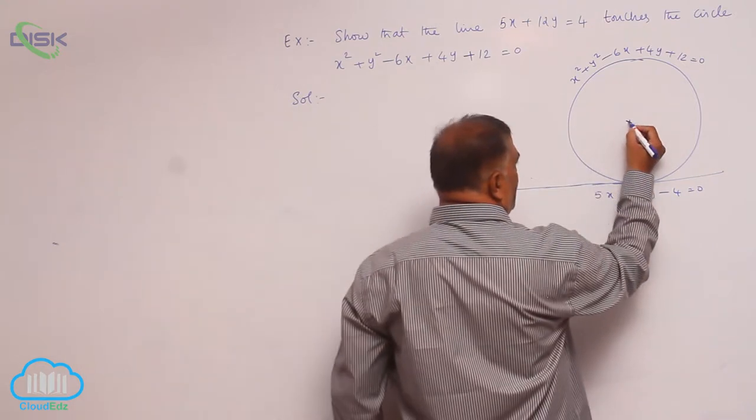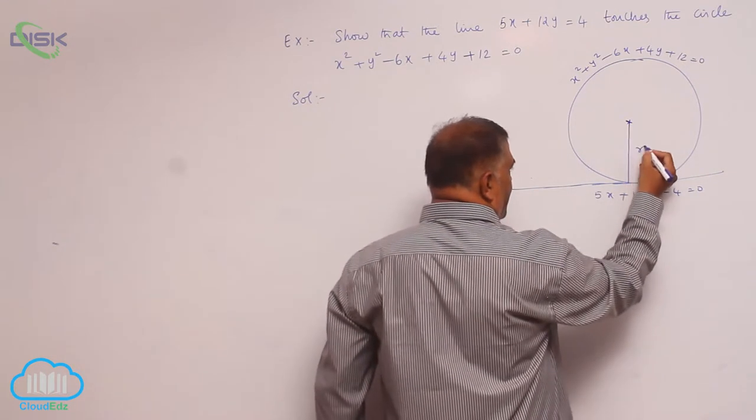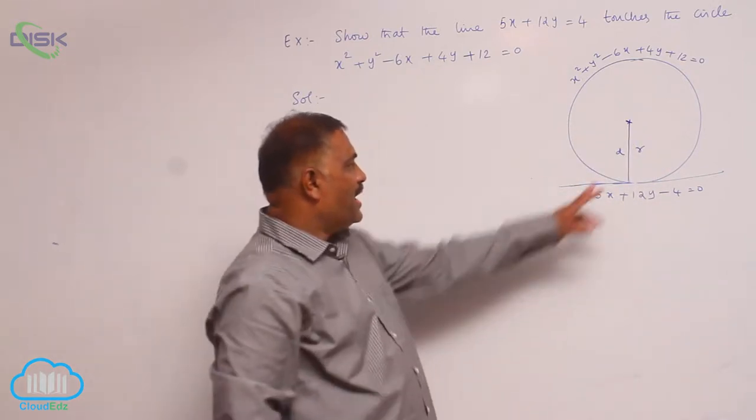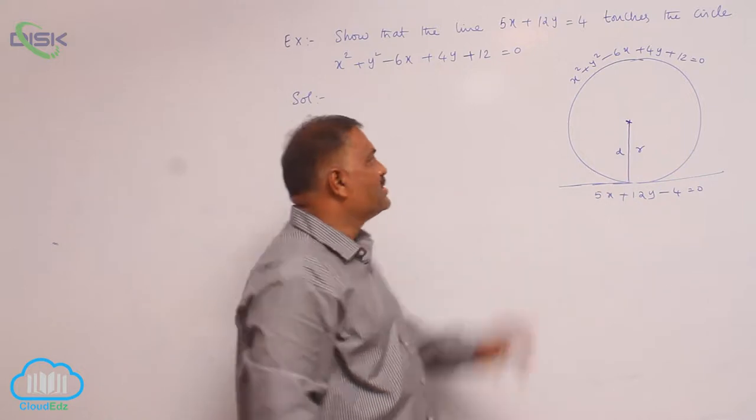If it touches the circle, we know that this is radius and this is perpendicular distance. We need to prove that radius is equal to perpendicular distance.